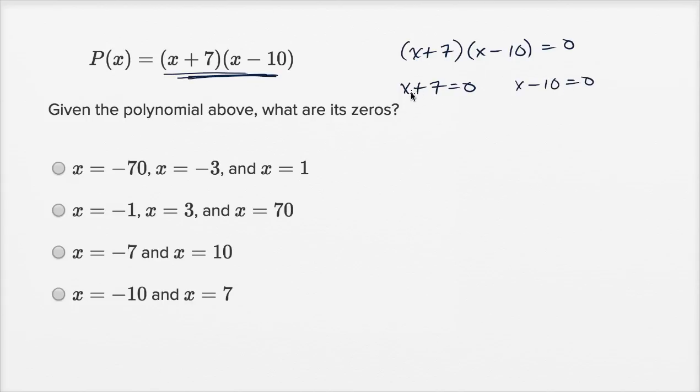So the zeros here, how do we get x plus seven to be equal to zero? We'll subtract seven from both sides. x could be negative seven. And if I add 10 to both sides here, x could be equal to 10.